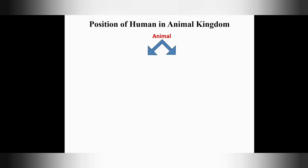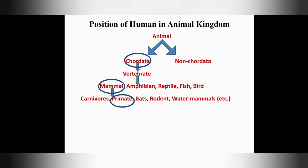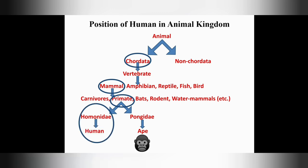The animal kingdom has been divided broadly into two categories on the basis of the presence of notochord on the back: chordata and non-chordata. In chordata, there is a subcategory called vertebrate — those who have a proper backbone or spinal cord. Vertebrates include mammals, birds, reptiles, amphibians, and fish. Mammals include several groups, including primates. Primates have two main categories: Hominidae and Pongidae. Pongidae further evolved to apes and Hominidae to humans. Therefore, both human and ape had the same ancestor: the primate.